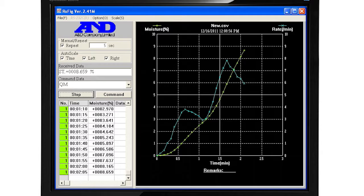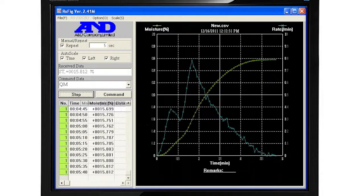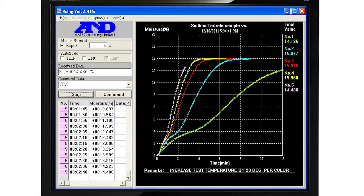Here, WinCT plots moisture content as it reaches its final value, and the change in moisture rate approaches zero, indicating the sample is now dry. Successive measurements at different temperatures are graphed in different colors.